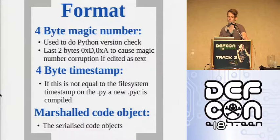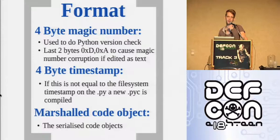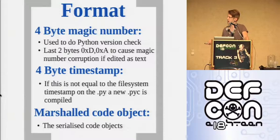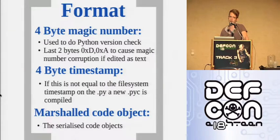The Python PYC format has a four-byte magic number for the version of Python, so the runtime can check what version it was compiled with and bail out if it doesn't match. There's a four-byte timestamp - we'll show why this is important later - basically used to decide whether a new PYC should be generated from a PY. And there's a marshal code object, which is the actual serialized code object where the Python code resides.